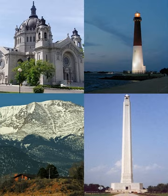Structures differ from buildings in that they are functional constructions meant to be used for purposes other than sheltering human activity. Examples include an aircraft, a ship, a grain elevator, a gazebo, and a bridge. The criteria of significance are applied to nominated structures in much the same fashion as they are for buildings. The basic structural elements must all be intact; no individual parts of the structure are eligible for separate inclusion on the NRHP. An example would be a truss bridge composed of metal or wooden truss, abutments, and supporting piers — all of these elements must be extant. Structures that have lost their historic configuration through demolition or deterioration are considered ruins and classified as sites.